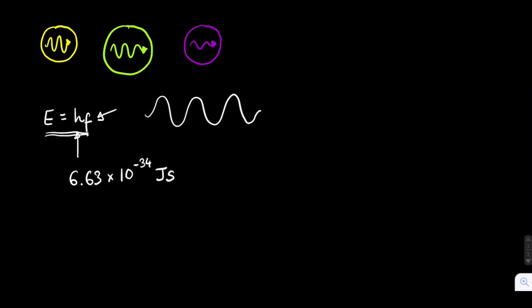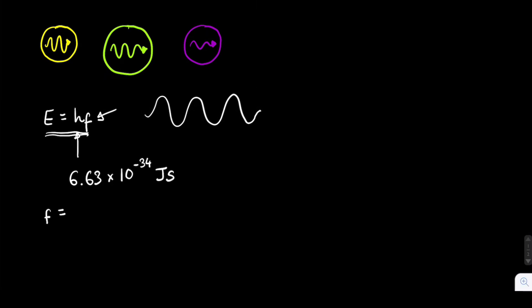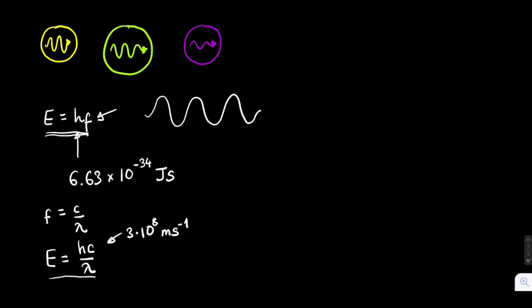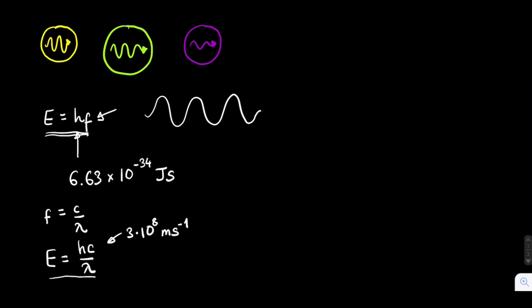You can also express this in terms of wavelength rather than frequency. Since frequency and wavelength are related by c equals f times lambda, and all electromagnetic waves travel at the same speed, if you increase the frequency you decrease the wavelength. Substituting that in, we find that E equals hc over lambda, where h is Planck's constant, c is the speed of light at 3 times 10 to the 8 metres per second, and lambda is the wavelength. This shows that the energy carried by a photon is inversely proportional to its wavelength.